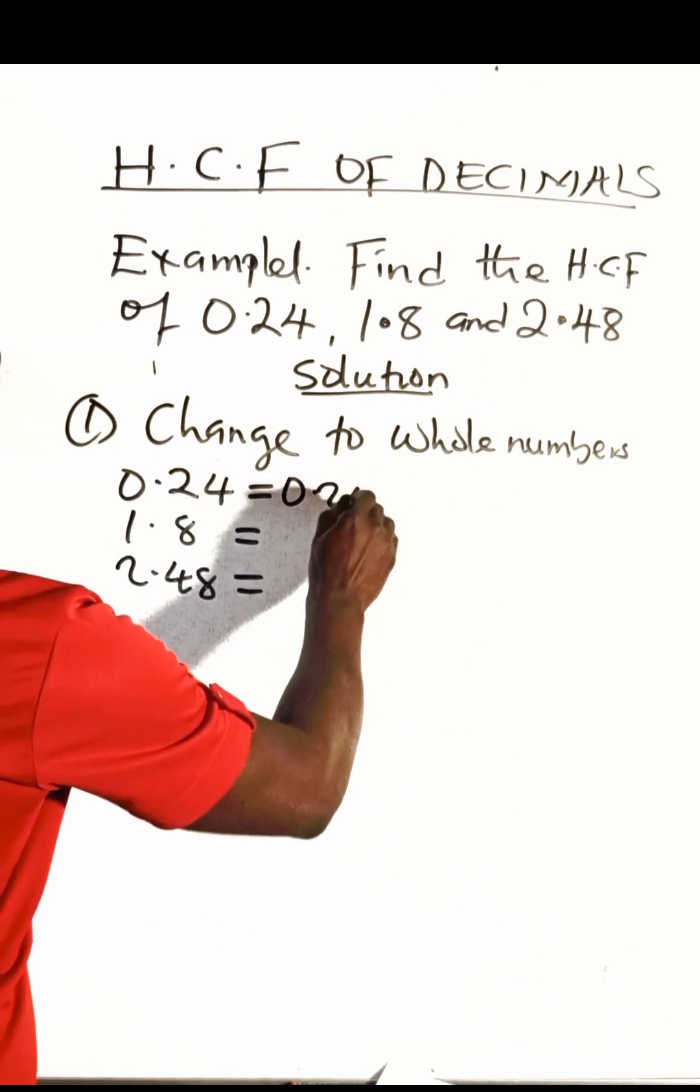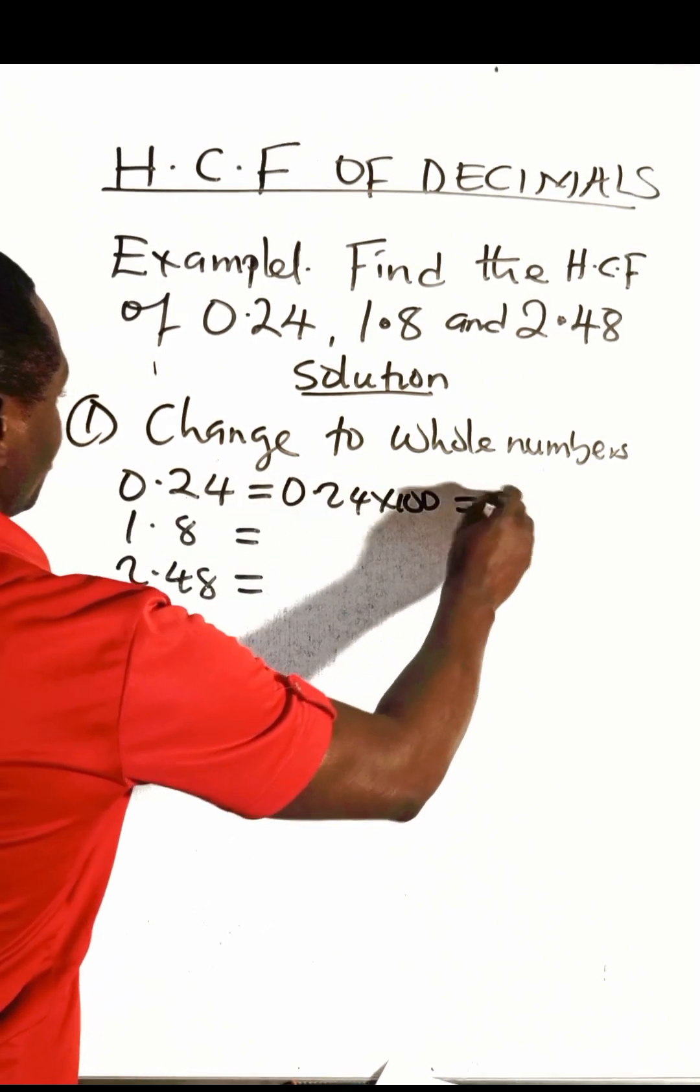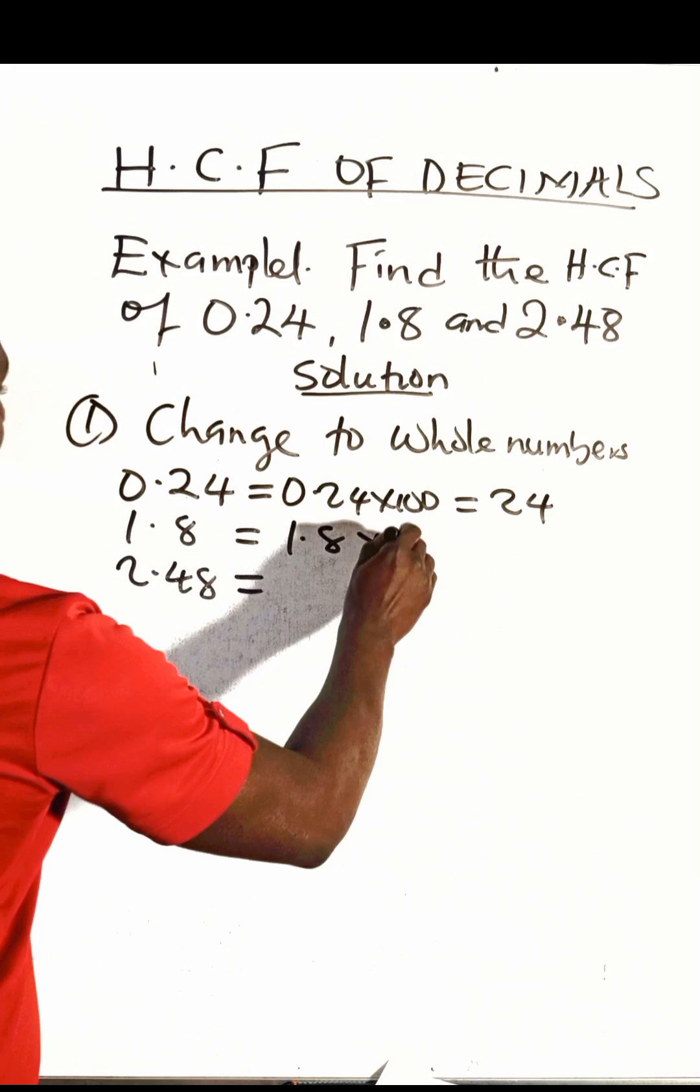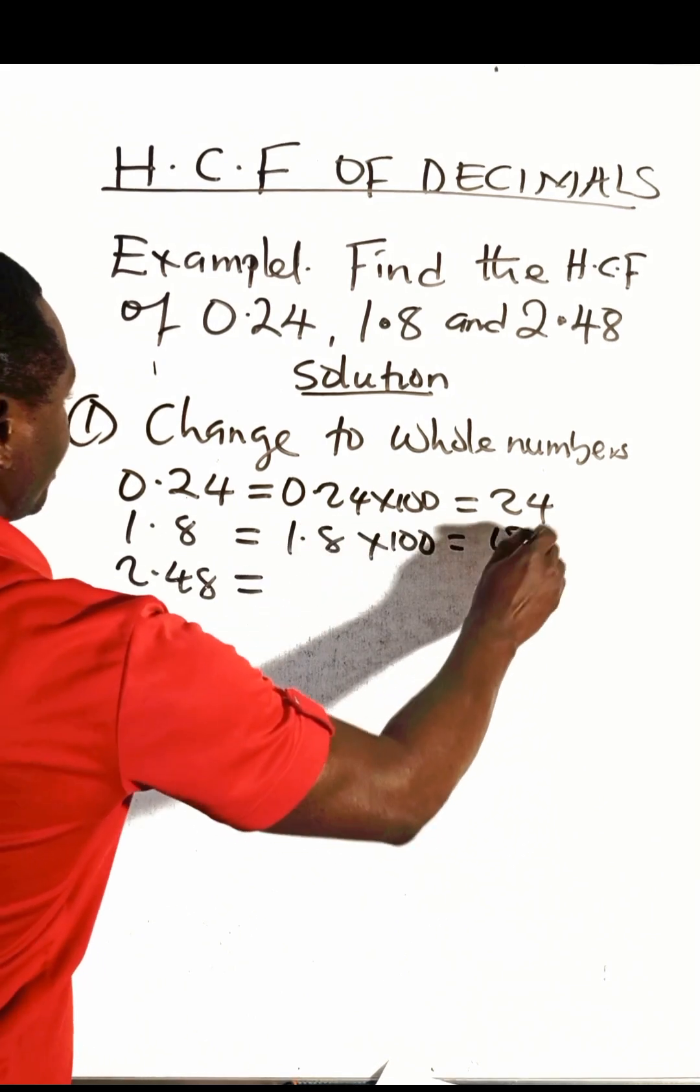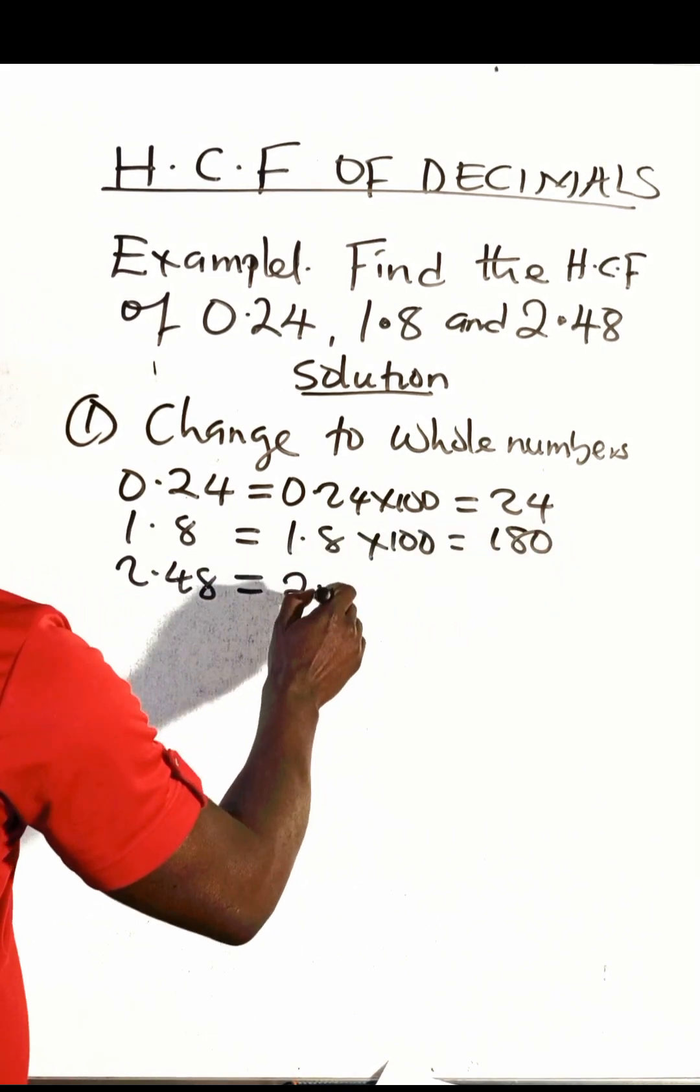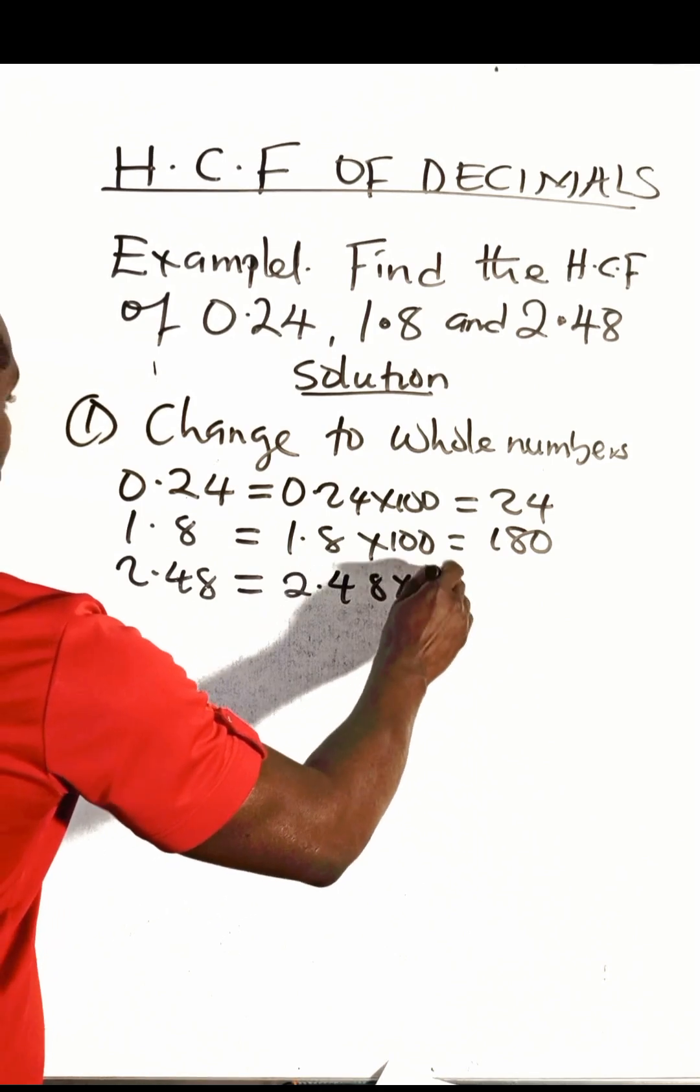So 0.24 times 100 will give you 24, 1.8 times 100 will give you 180, then 2.48 times 100 will give you 248.